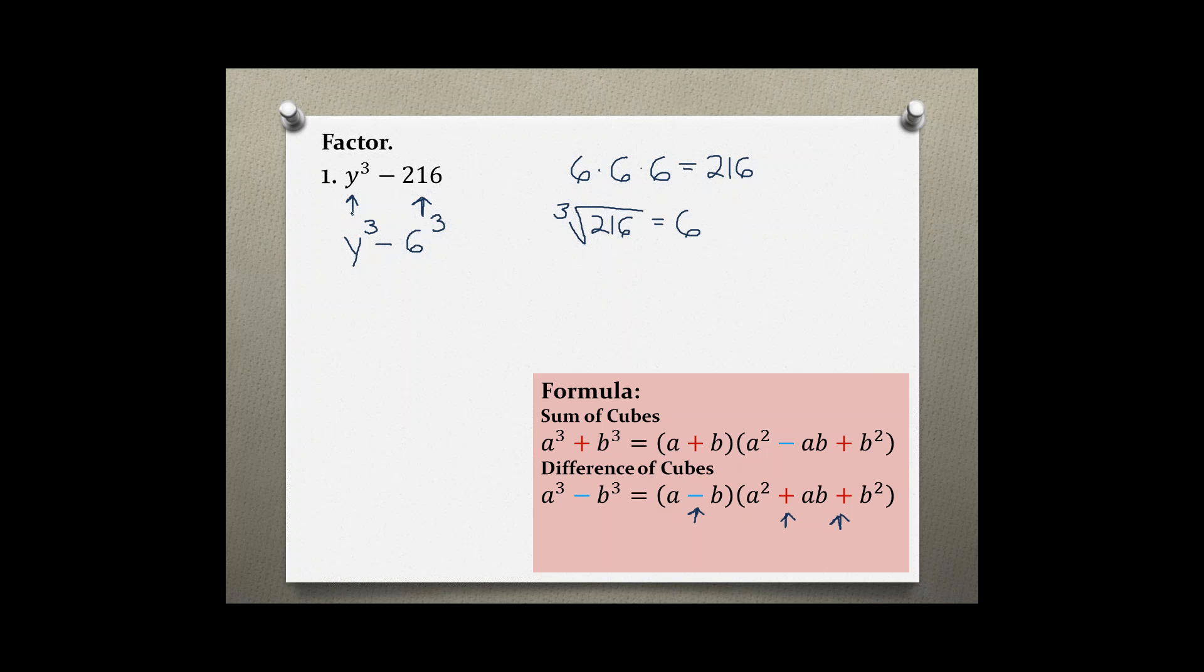Now that we know our a and b, we can write the formula: a, which is y, minus b, which is 6, then a squared, which is y squared, plus a times b.